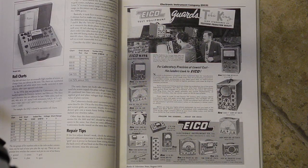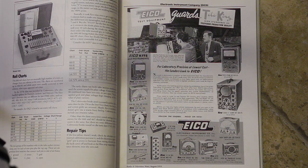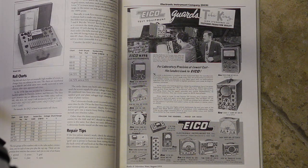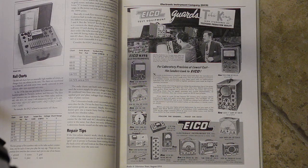EICO was the Electronic Instrument Corporation founded in New York City in 1945 and a manufacturer of electronic test equipment, amateur radio, and consumer products. Like Heathkit, many of their products were offered in kit form. The company went out of business in the late 1970s.